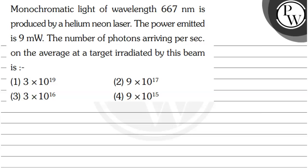Hello, let's read this question. The question says that monochromatic light of wavelength 667 nanometer is produced by a helium neon laser. The power emitted is 9 milliwatt.